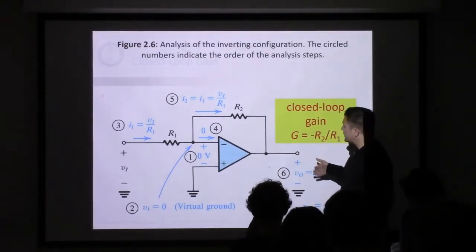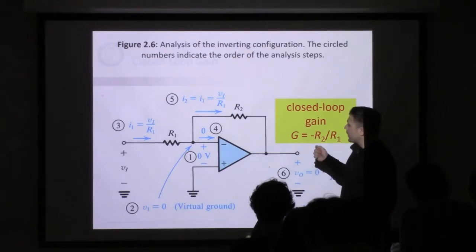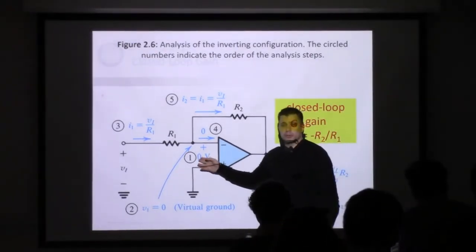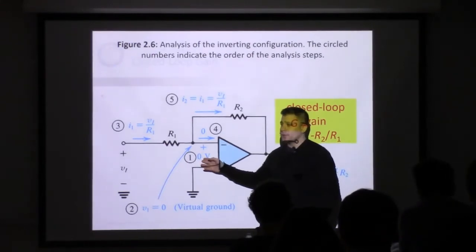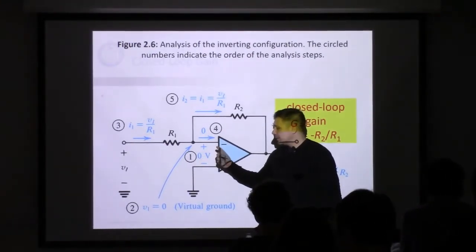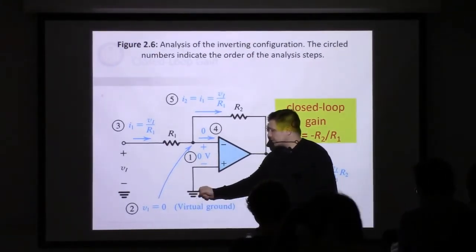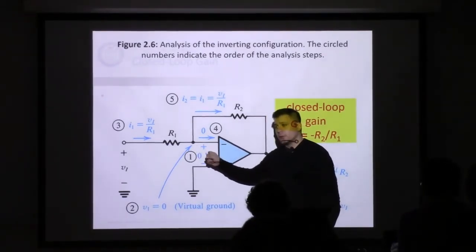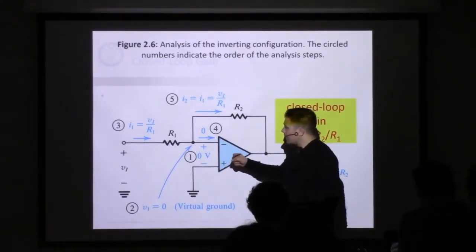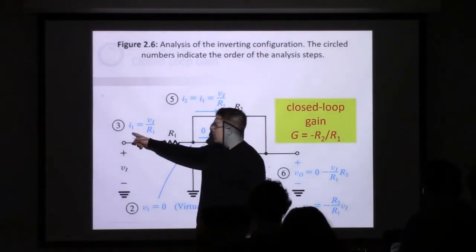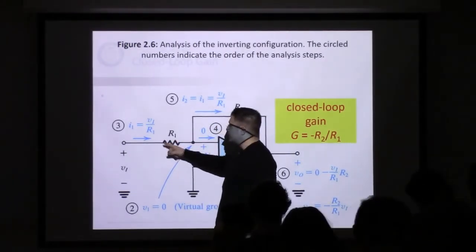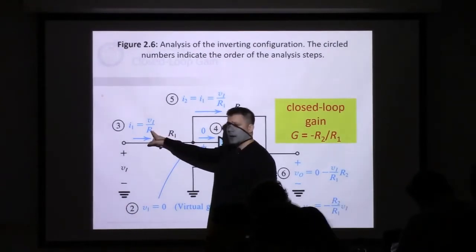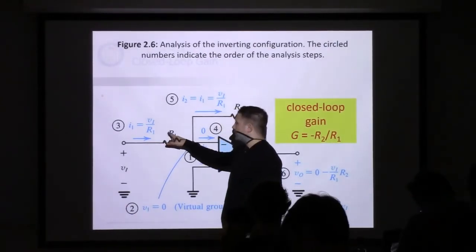Step 1 through 6: we start off by applying our virtual short between the inverting and non-inverting terminals of the op-amp. Since this terminal is grounded, we know there's a virtual ground or zero volt potential here. Then we calculate the current flowing along the input, which is VI minus zero over R1.